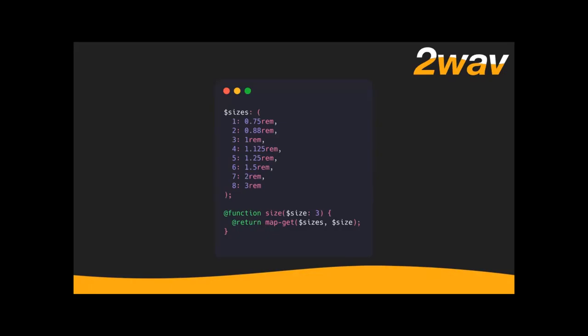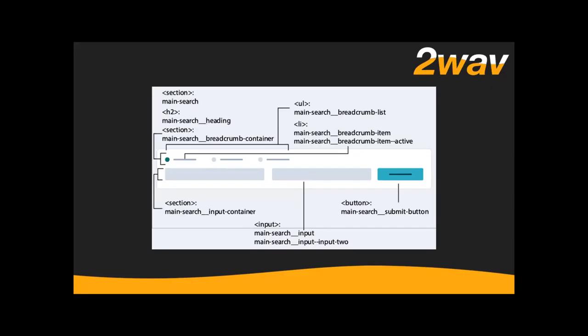Just like I do colors, I like to do sizes in a Sass map so I can call a get-size function. I say that three is where my one-rem mark is, and if I need to go smaller or larger I just go through the scale. When I'm ready to start implementing a given component — and I like main search, it's got enough stuff going on — I do the same thing I do for the page itself: go through and figure out what everything is called.